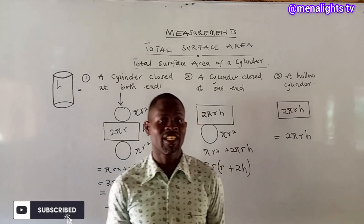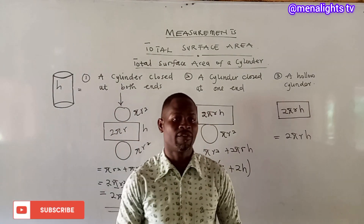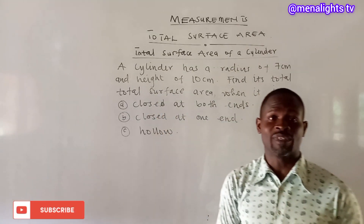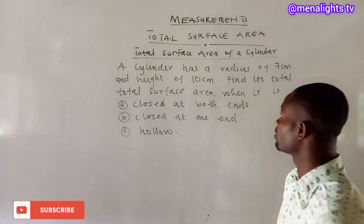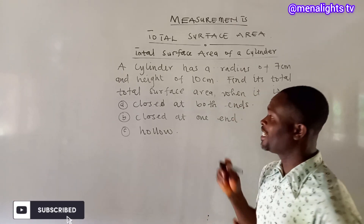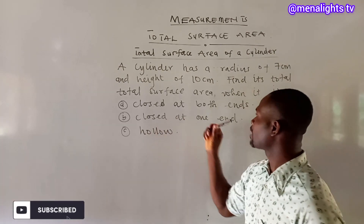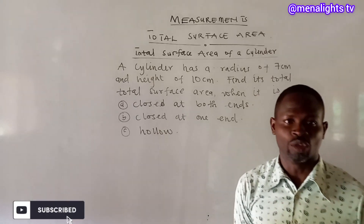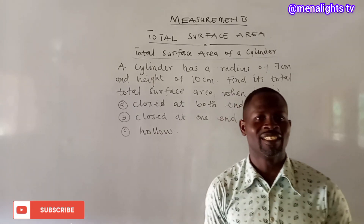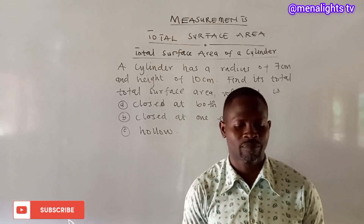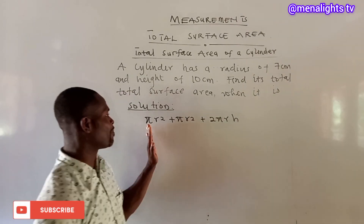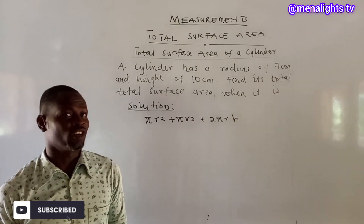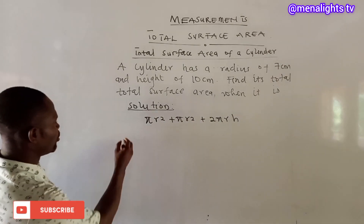Now we are going to take a question and solve it using the three formulas. The question is: a cylinder has a radius of 7 cm and a height of 10 cm. Find the total surface area when it is: A — closed at both ends, B — closed at one end, and C — hollow. We are going to take them one by one.